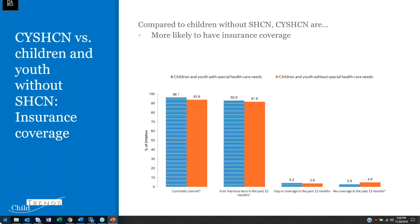Regarding insurance coverage, children and youth with special healthcare needs tended to have slightly more access to insurance than those without special healthcare needs. The NSCH survey asks whether the child is currently covered, and children with special healthcare needs were likely to be covered and to have had insurance in the past 12 months — a statistically significant finding. The numbers also show they are likely to have a gap in coverage, but the difference in gap coverage was not statistically significant.